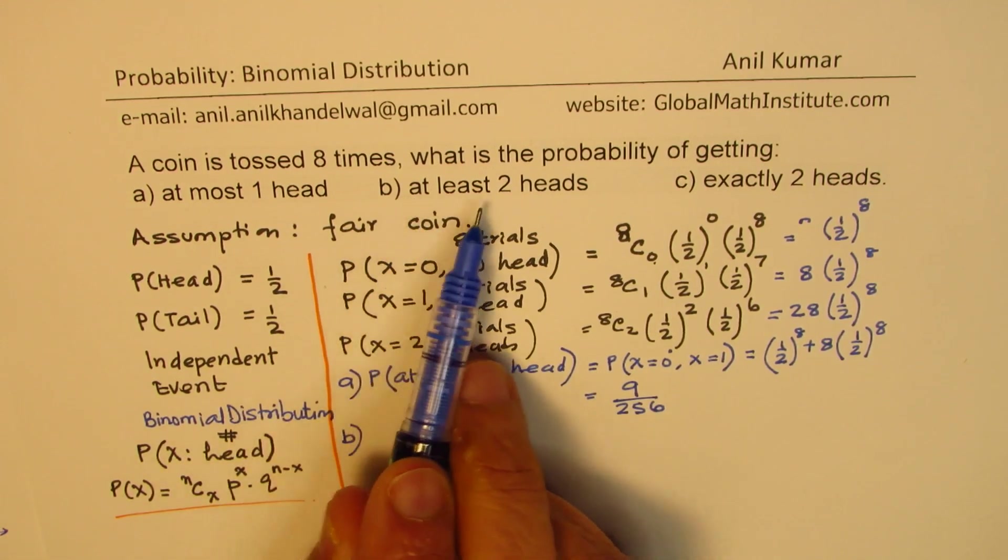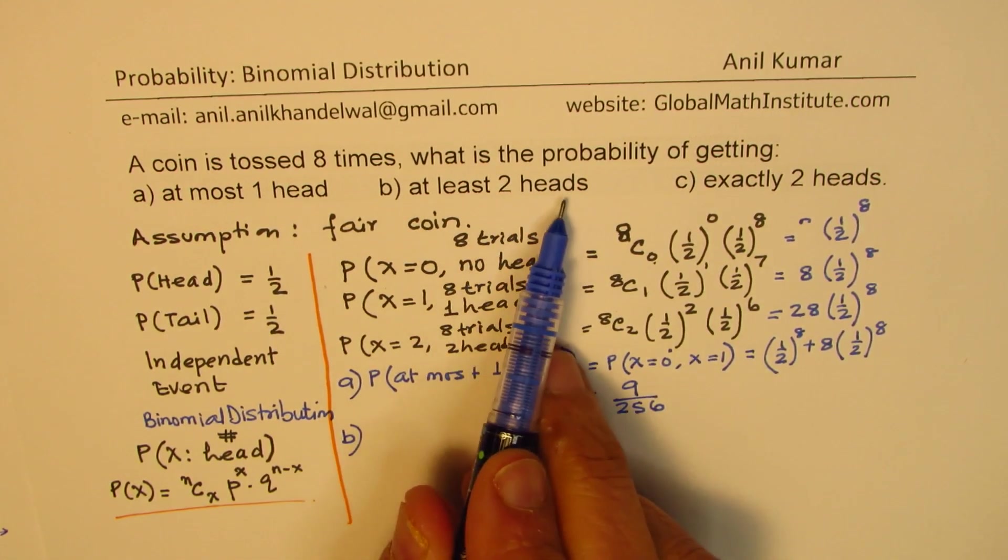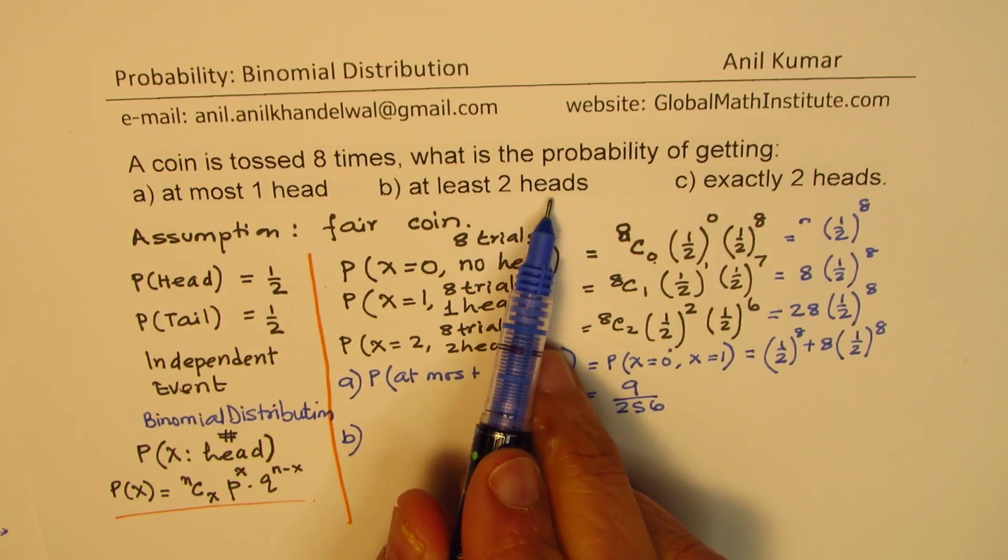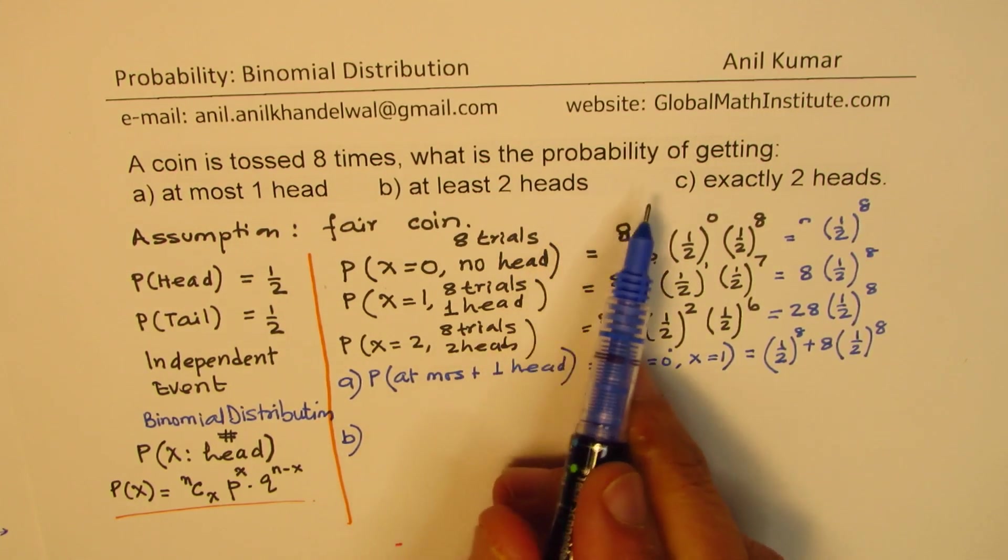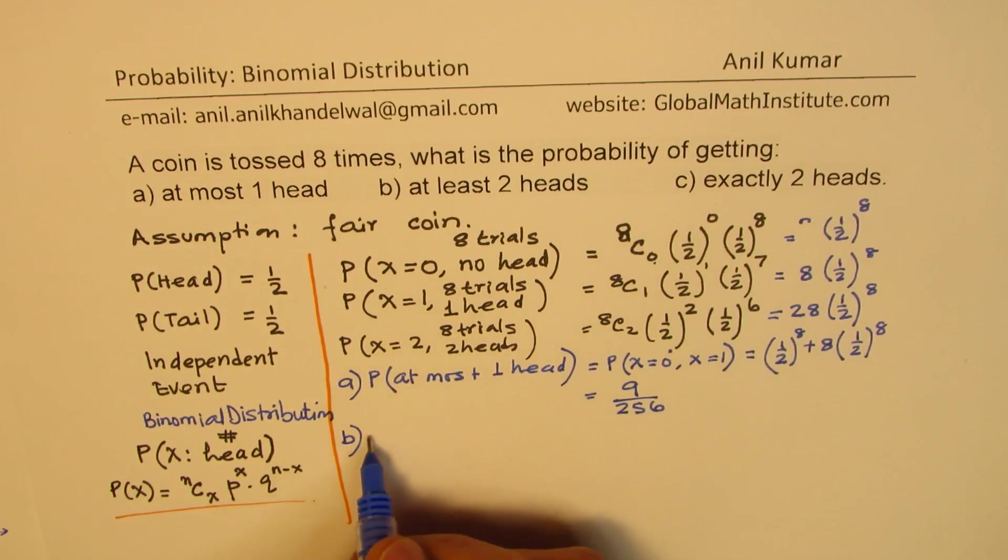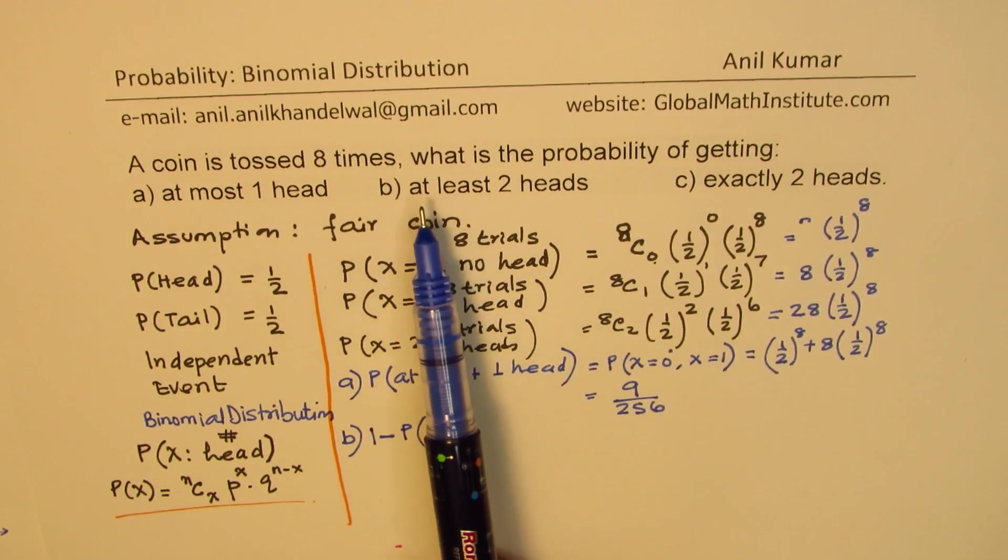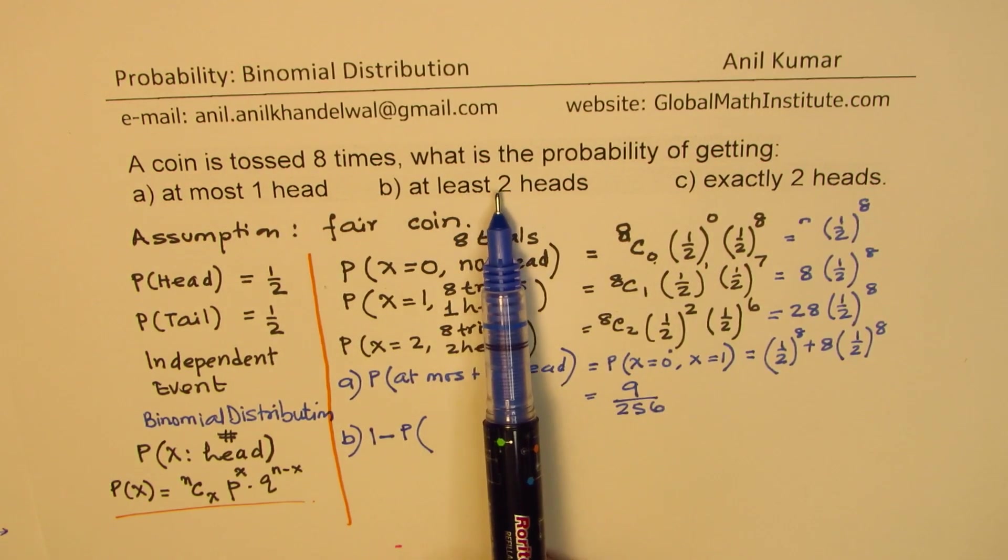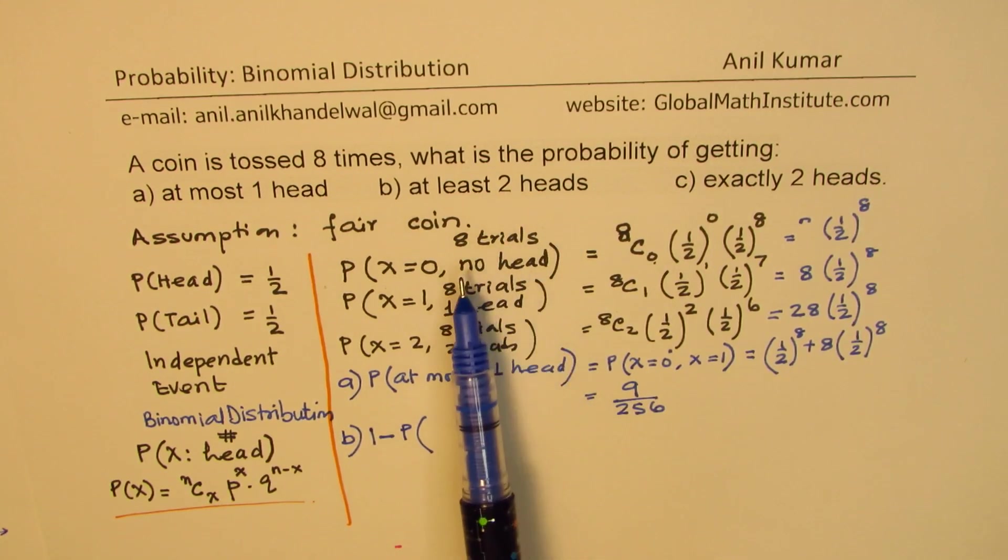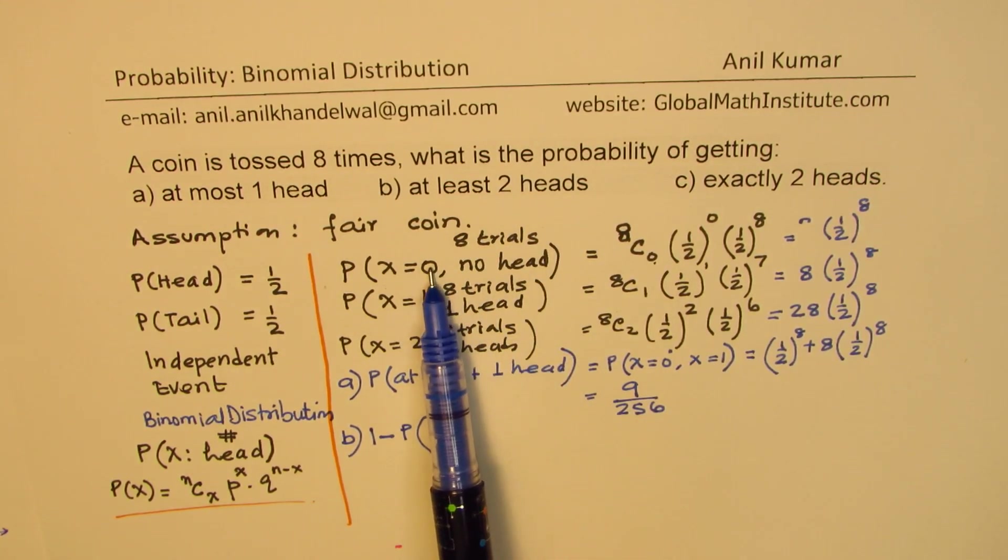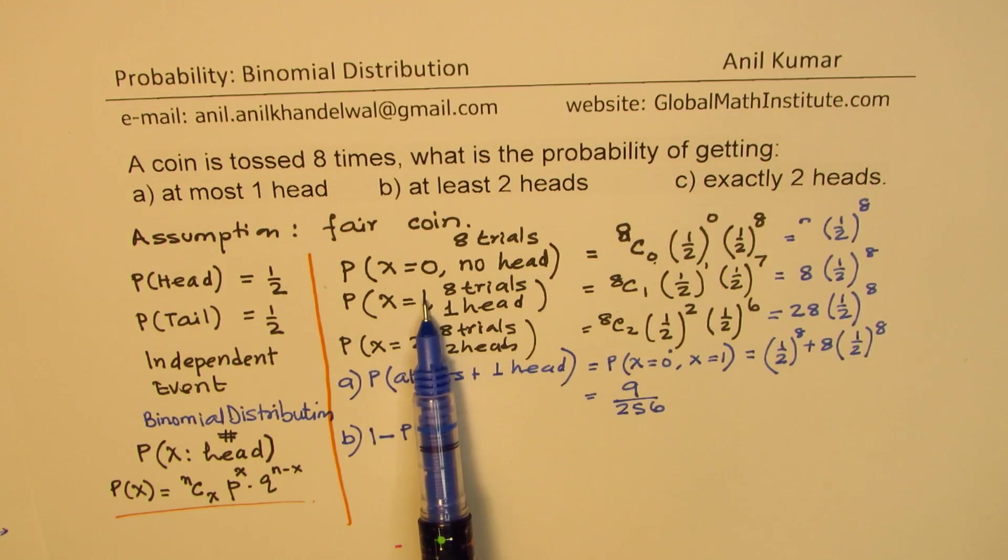Now let's look into part B. Part B is at least two heads. At least two heads means you get two, three, four, five, six, and so on. So that means we are looking for one minus probability of getting what? We will now look into probability of getting tails. So when you say at least two heads, that means we are not considering the case where we have zero heads or we have one head.